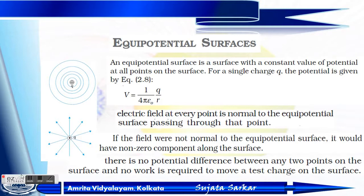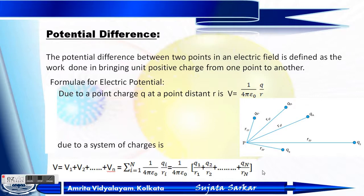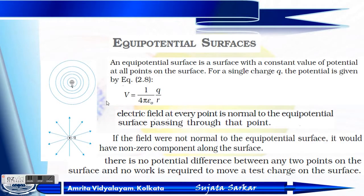If we take equal distances from a charge q at the origin, then all those equidistant points will create an equipotential surface. An equipotential surface is a surface with a constant value of potential at all points on the surface — meaning the potential remains constant throughout. For a single charge q, the potential is given by V equals one over four pi epsilon-naught times q over r.